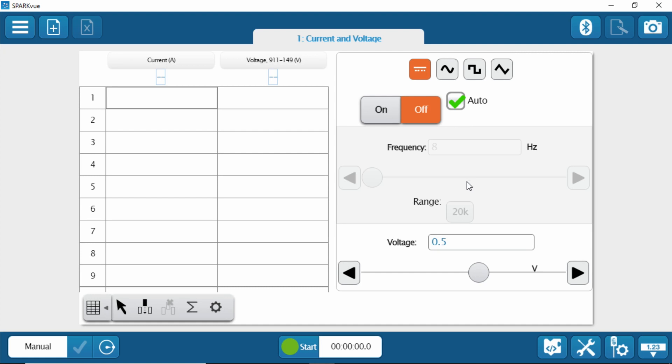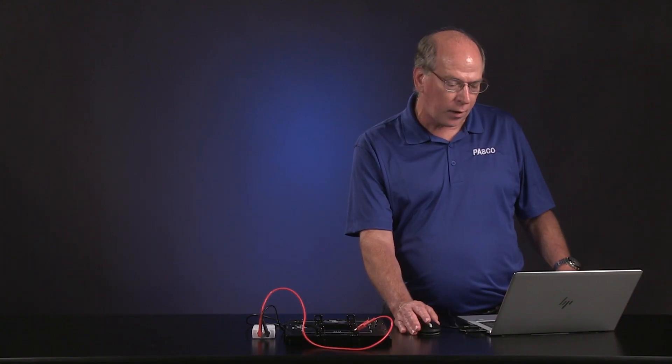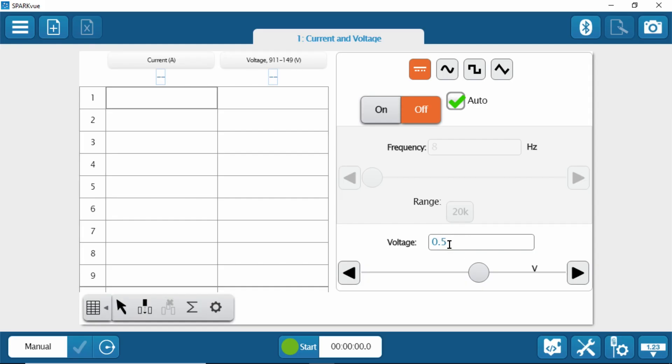And then this is the control panel for the AC-DC module. I have it on DC. I have it on auto, so when I start collecting data, it'll just automatically turn on. And I've set the voltage for 0.5 to come out of the AC-DC module. So I click Start, and we're measuring the current in amps here and the voltage across the resistor in volts here. And if I click the green check mark, it saves that.